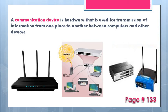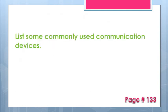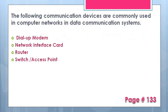We send information from one computer, and here you can see pictures showing different types of devices through which we can send information. There are four commonly used communication devices: dial-up modem, network interface card, router, switch, and access point.